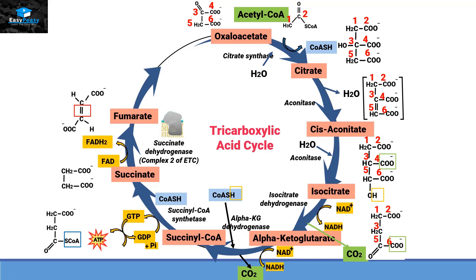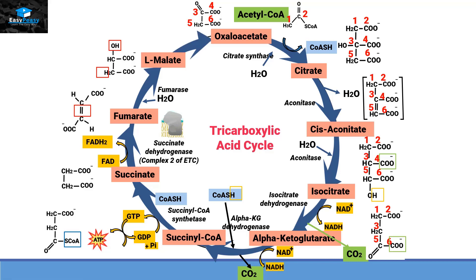Fumarate, with the help of an enzyme called fumarase and water, converts itself into L-malate. The water adds OH to one carbon and H to the adjacent carbon. L-malate, with the help of an enzyme called malate dehydrogenase, converts itself into oxaloacetate. This is again a dehydrogenase enzyme, so it removes hydrogen from the compound and gives it to NAD+, converting it into NADH. This oxaloacetate is then available for the next acetyl-CoA.